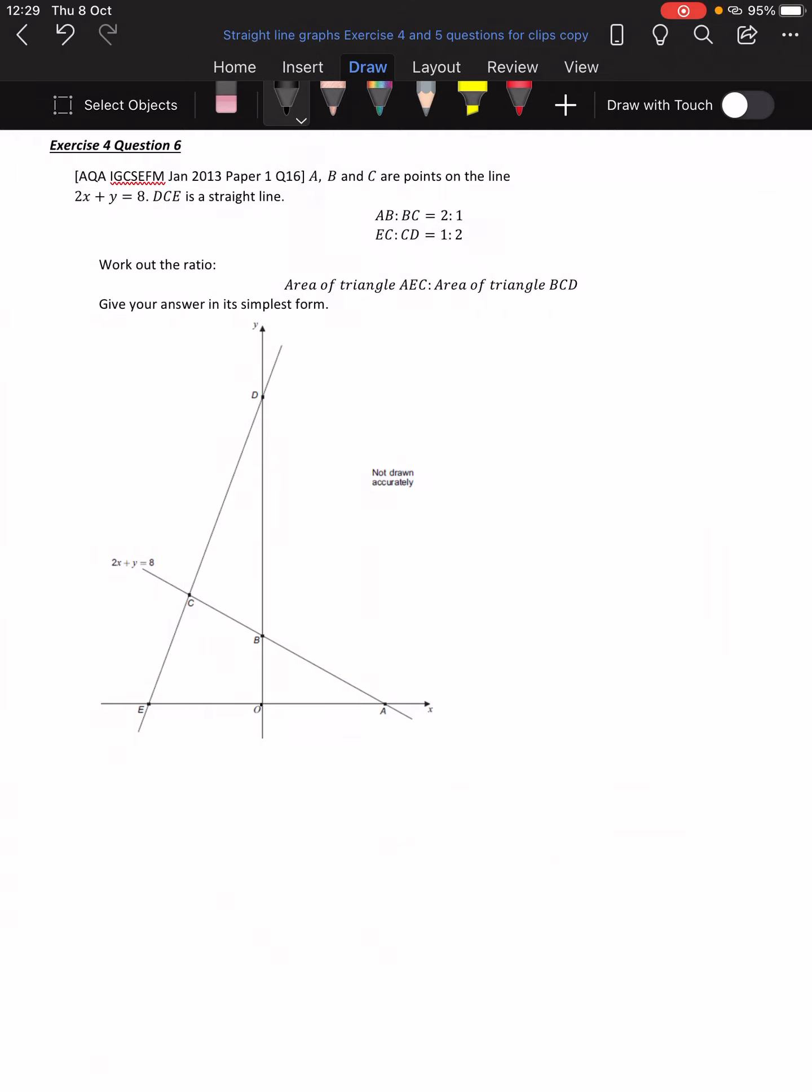D, C, E is a straight line, and I think that was the issue, that we didn't have much information about that. Yes, that's right. So there's no equation of the line for that. It does tell us some information about ratios, so how we split our lines. So the ratio between A and C is split 2 to 1, and the ratio between E to D is split 1 to 2.